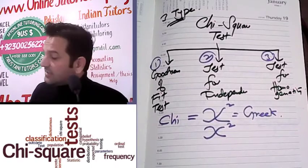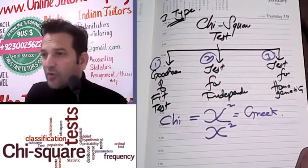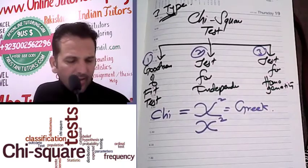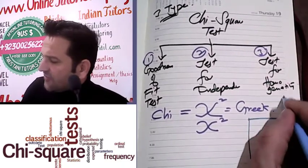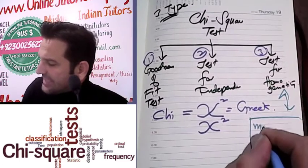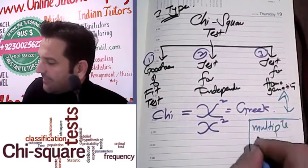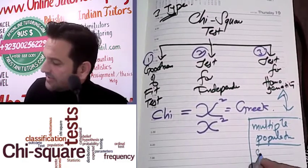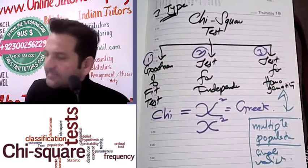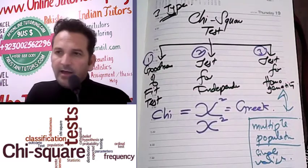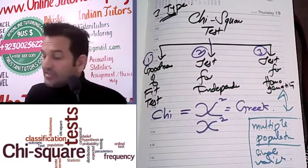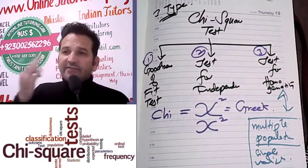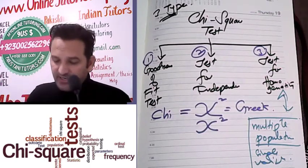In the test for homogeneity, we have multiple populations and a single variable. So we will discuss a single variable across multiple populations. That will be the test for homogeneity. So we have three types of tests in the chi-square test.